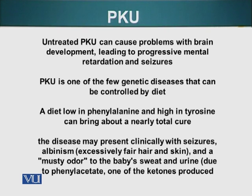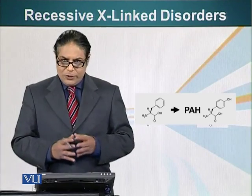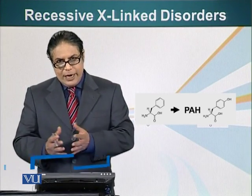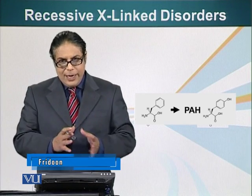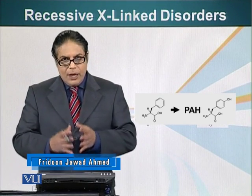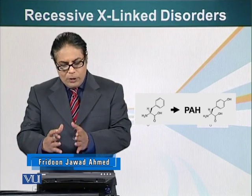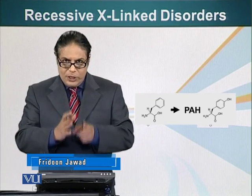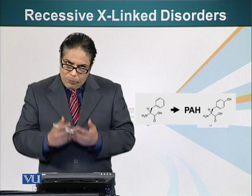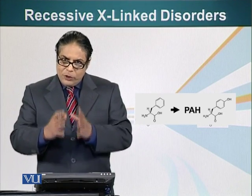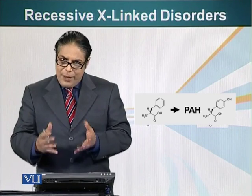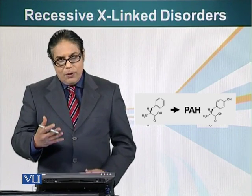I've given you an example of an autosomal recessive disorder and also one of the few genetic disorders that can be completely managed — people suffering from this disease, because they have two mutated copies of the gene that are unable to make a normal PAH protein, can be successfully managed. Next, we will look at sex-linked recessive disorders.